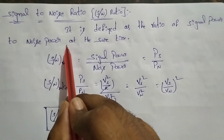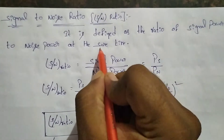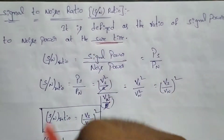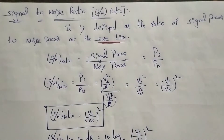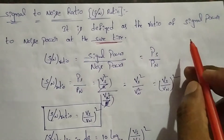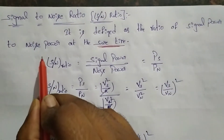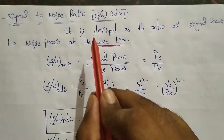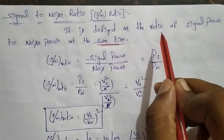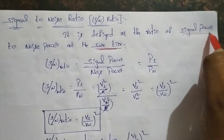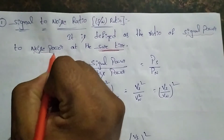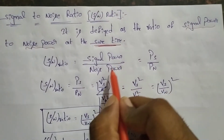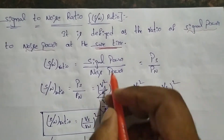At the same instant of time, let's calculate signal power and noise power. Signal is a power and noise is a power. So it is defined as the ratio of signal power to noise power. Signal-to-noise ratio is equal to signal power divided by noise power.